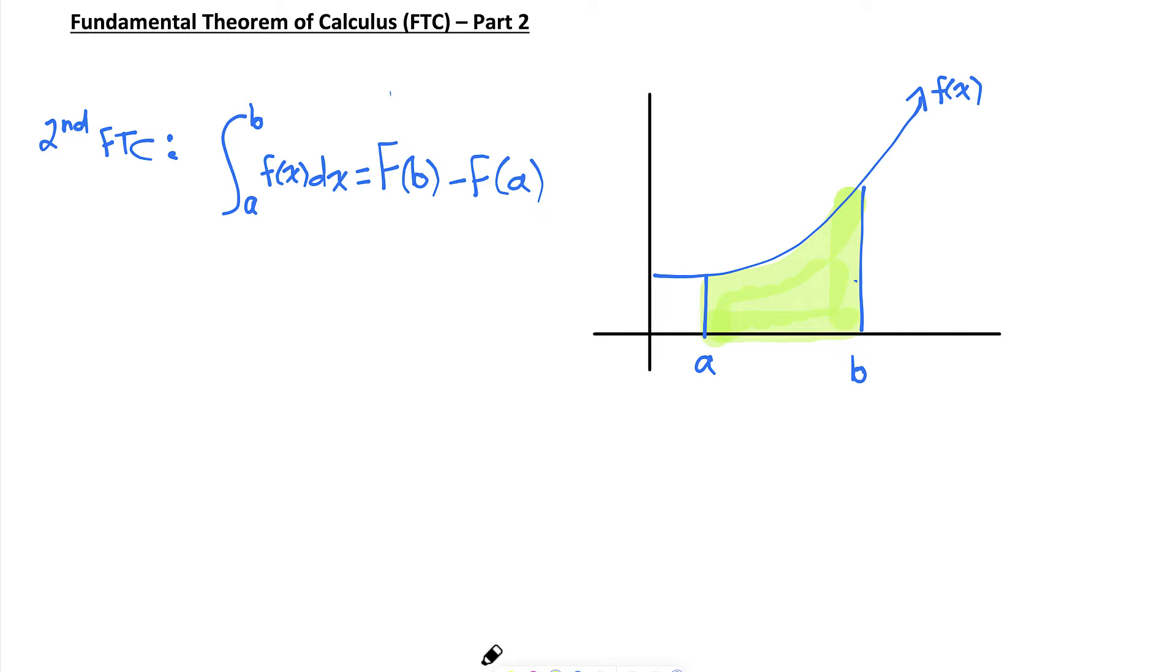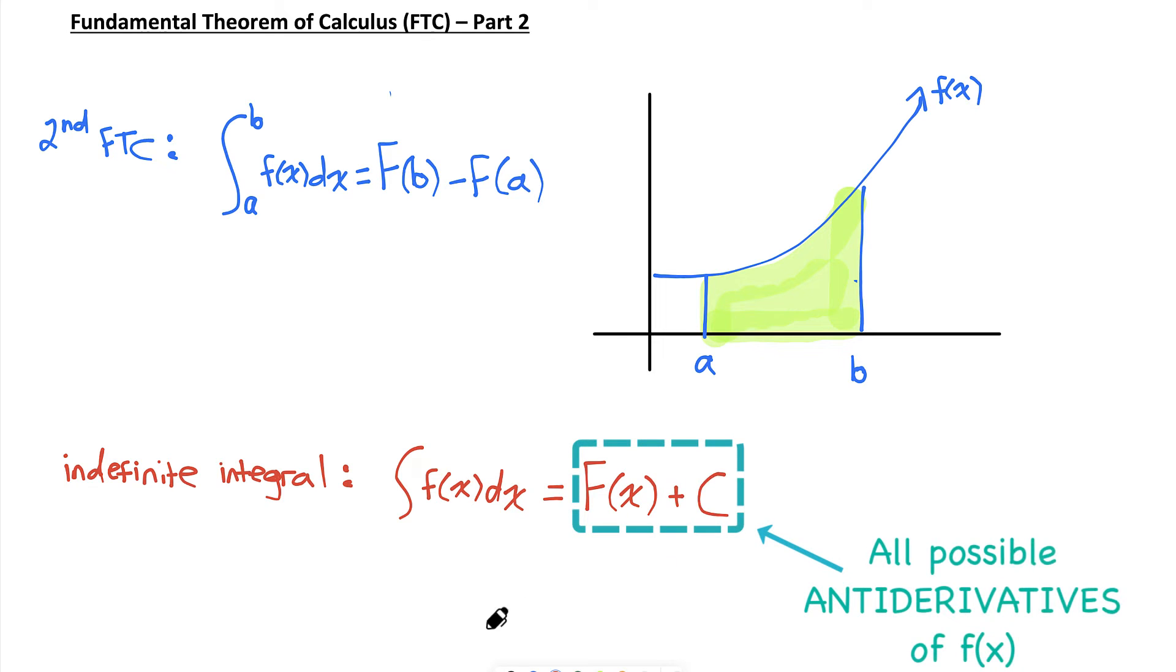So why are we allowed to do that? What you should know up until now is what an indefinite integral is. An indefinite integral doesn't have an upper and lower boundary, so the integral of f(x) dx. Normally, you would write that as equal to capital F(x), the antiderivative of f(x), plus the constant of integration, which could be any constant. So why in the second fundamental theorem of calculus do I see, in place of my constant of integration, negative capital F(a)? I'll explain that to you in the proof, and it'll all make sense.